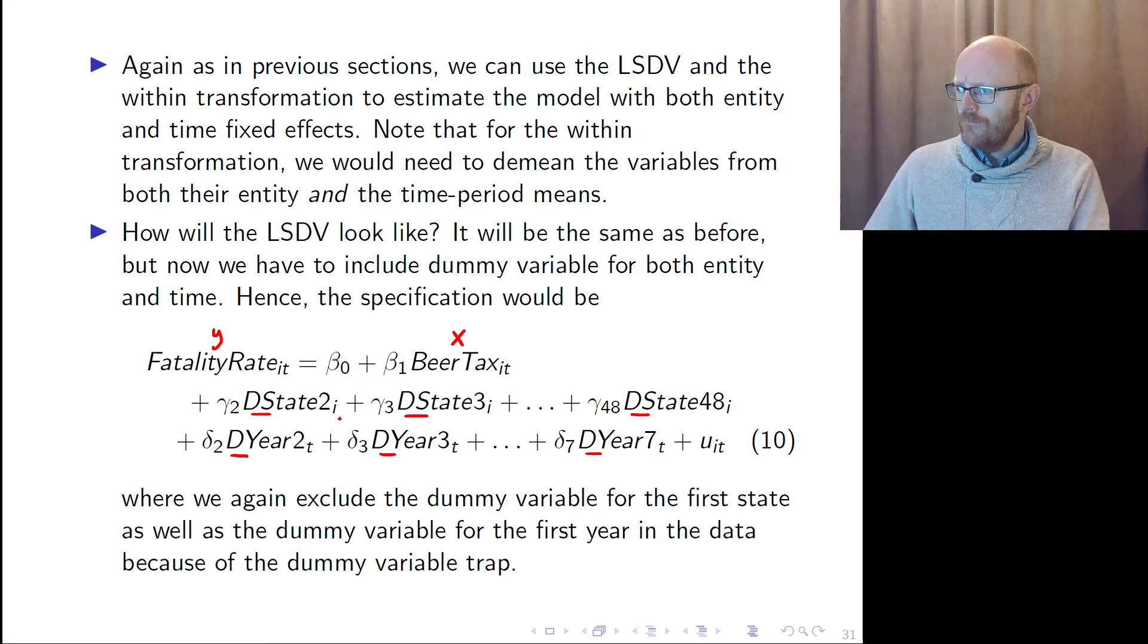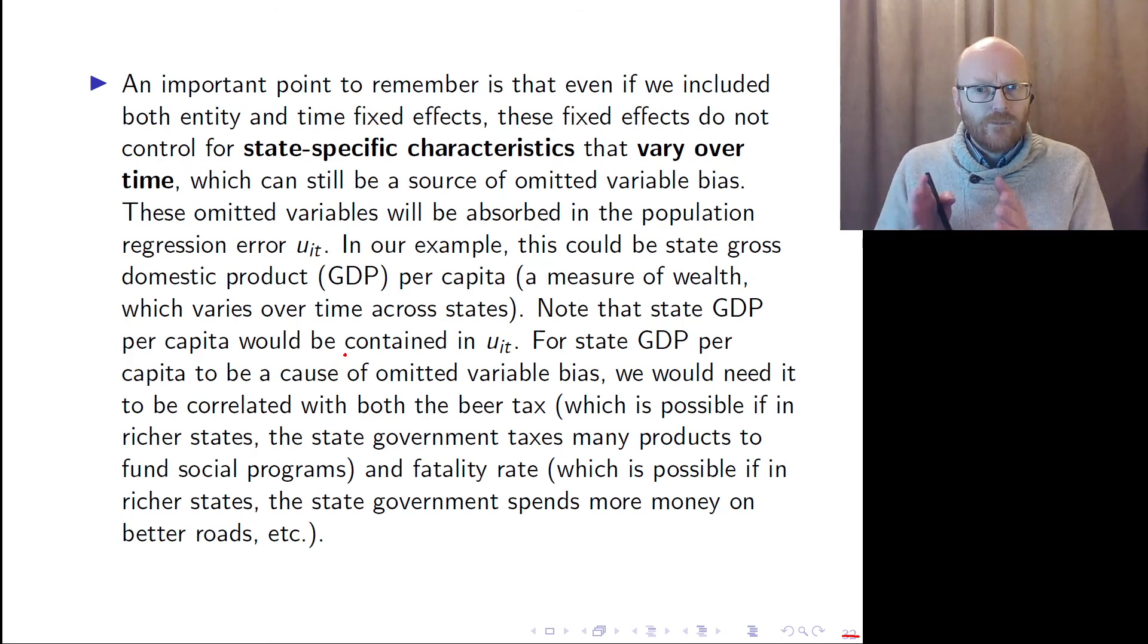Even if we include both time fixed effects and entity fixed effects, they do not control for effects which vary both across state and across year. For example, the GDP per capita for each state. But remember the omitted variable bias assumptions. If any such variable should create an omitted variable bias, then it must be such that this variable is correlated with the beer tax and has an effect on the fatality rate.